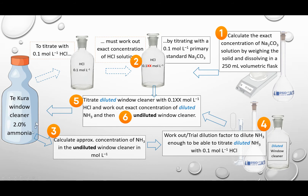We have our window cleaner. We need to titrate with an acid and we need to know the exact concentration of the acid. So we do that by titrating it first with a primary standard. Once we know the concentration of our acid to three significant figures, we need to see, can I titrate this with my window cleaner? And the way you work that out is you do a trial to see, is it a one-to-one ratio or must I dilute the window cleaner? Is the window cleaner too concentrated? Because I need to use similar volumes of acid and base, otherwise I start getting errors.